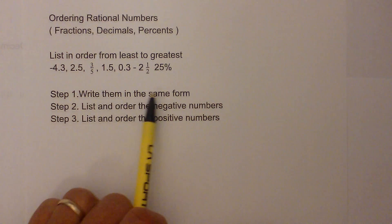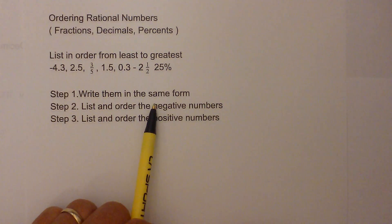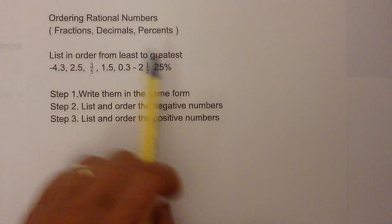So you can follow these steps. First write them in the same form. Then list in order the negative numbers, then list in order the positive. And the reason we are doing the negative first is because we are going from least to greatest.